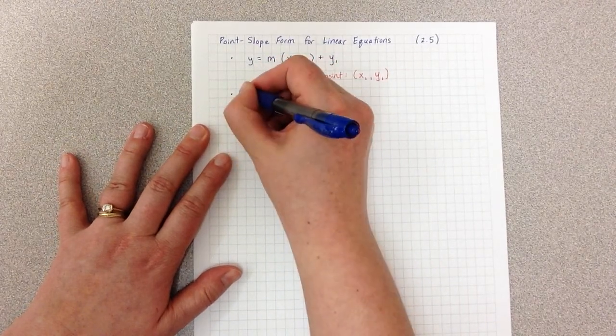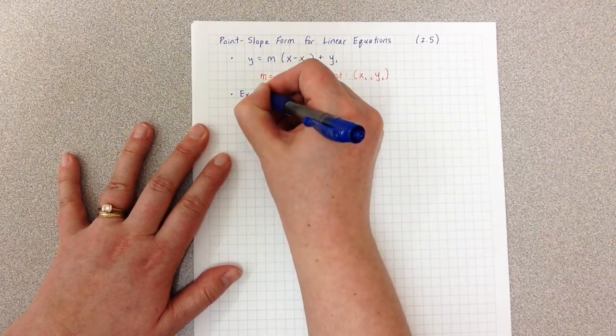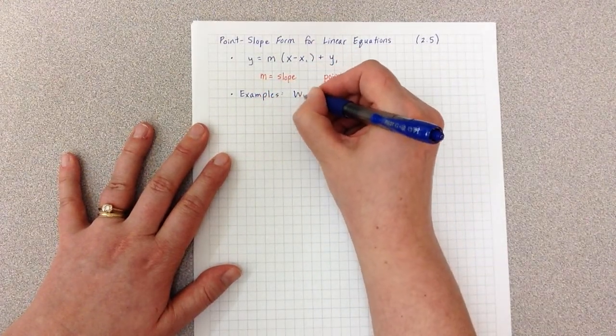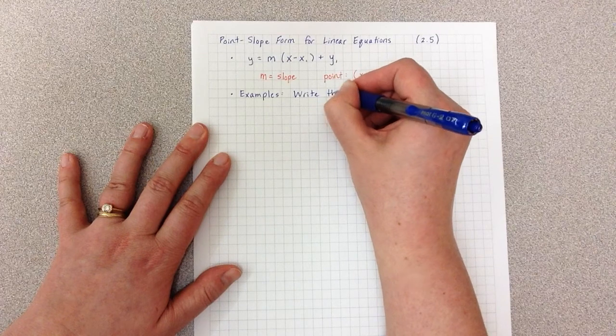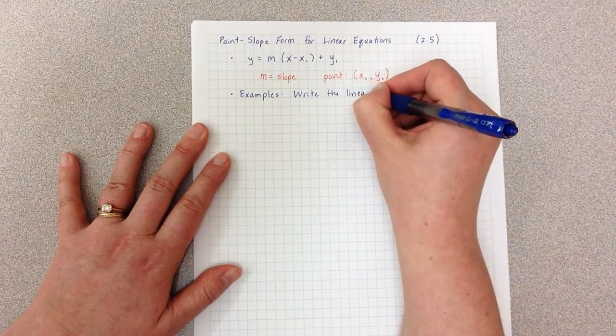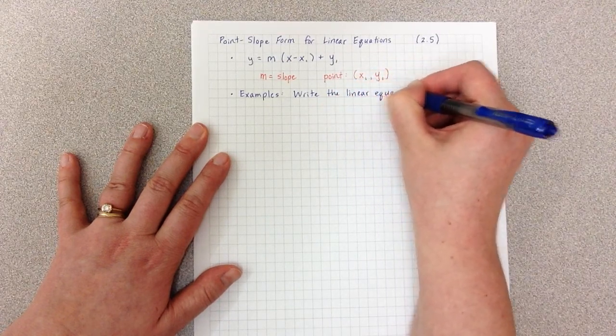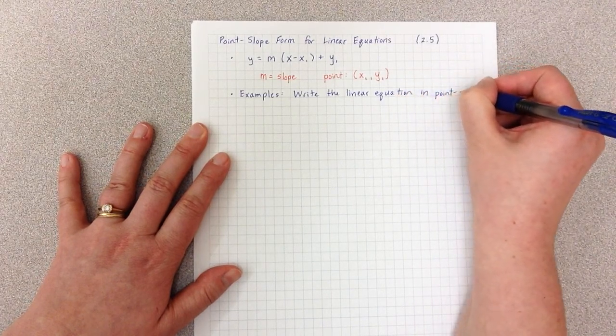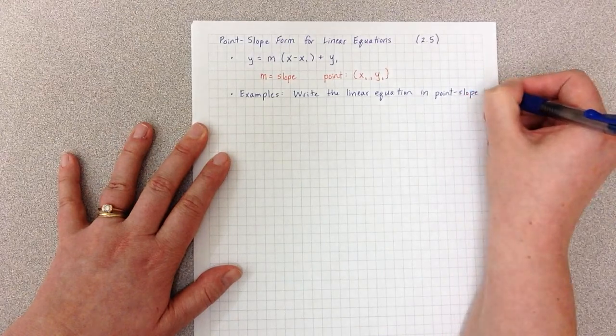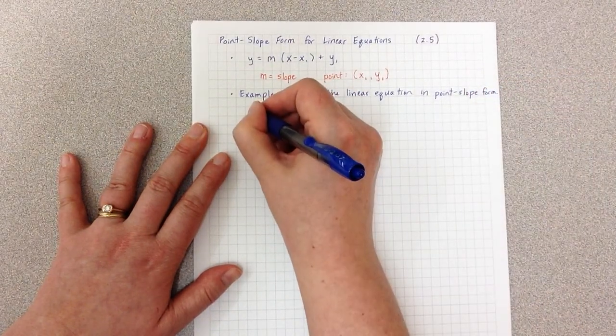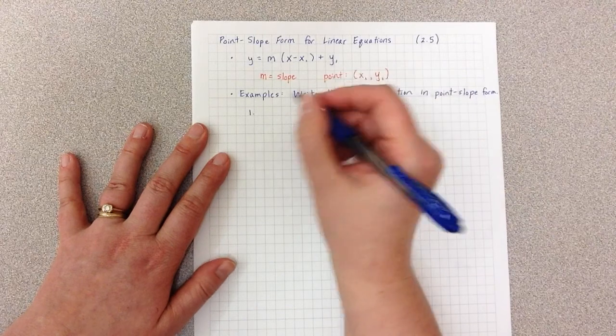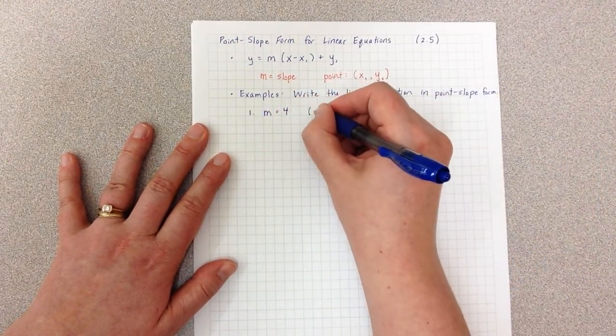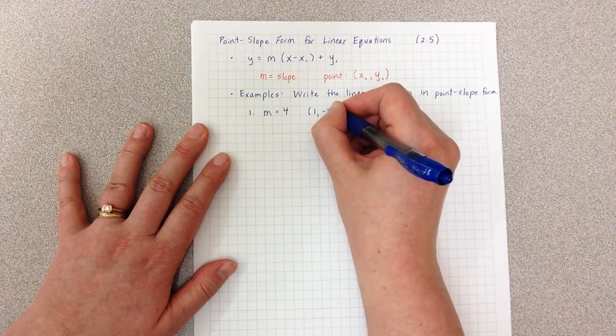Let's look at a couple examples. On both of our examples, we're going to write the linear equation in point-slope form. In our first example, we are given a slope, m equals 4, and we're given the point 1, negative 2.